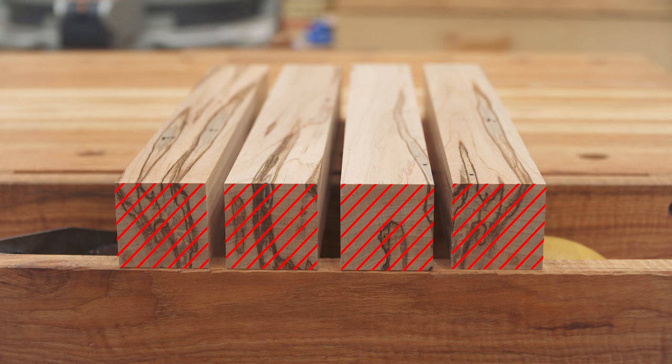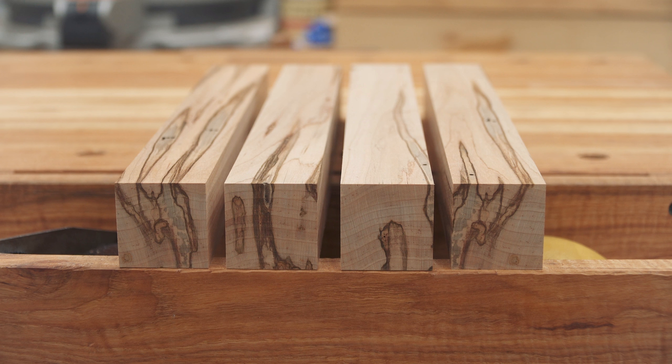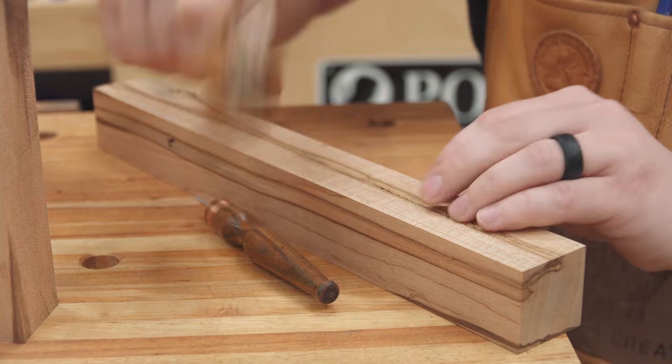However, I just wasn't feeling it with the rift sawn sections that I had. The ambrosia streaking really wasn't strong in those areas, so instead, I decided to just go for the areas with the highest concentration of ambrosia streaking. And the result was four blanks that are primarily flat sawn or quarter sawn, depending on which side you look at them. But my thinking here is that in this particular case, it's going to be acceptable because the ambrosia streaking is what's really going to stand out and grab the attention. That's where your eyes are going to go anyway. The difference between the flat sawn and quarter sawn grain of the maple, all of that's going to be secondary.